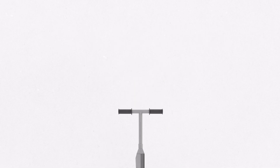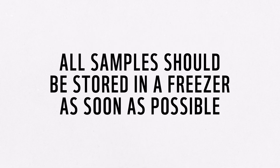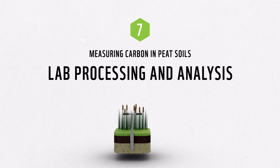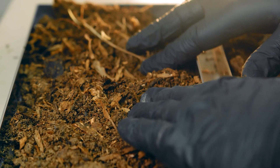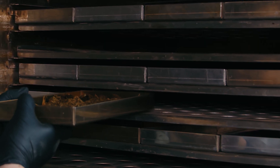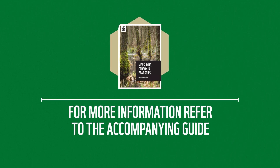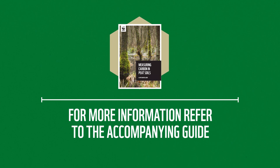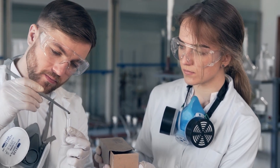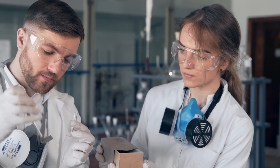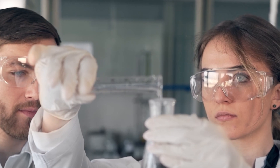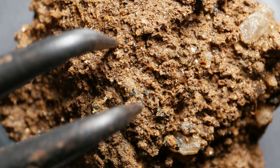All samples, whether packaged whole or sectioned, should be transferred and stored in a freezer as soon as possible for lab analysis. With fieldwork complete, the peat cores are now ready for lab processing. In the lab, the samples will be weighed, dried, ground up, and analyzed for physical, chemical, and biological properties. A detailed procedure of the lab protocols can be found in the accompanying guide. This lab analysis will provide you with the bulk density and carbon content measurements essential for calculating the carbon stock of the peat core, which can then be used to estimate the amount of carbon stored in the peat of your study area.